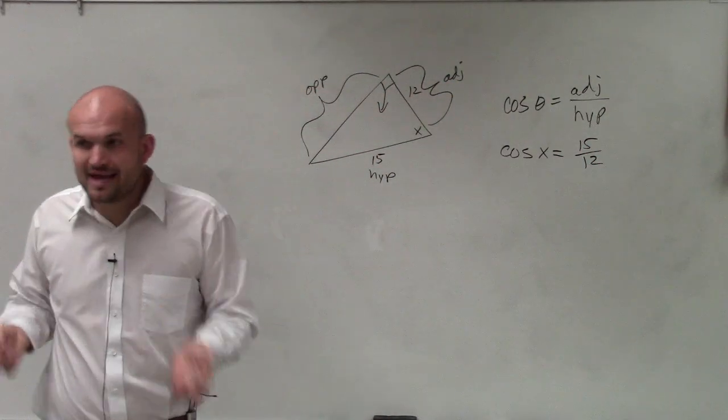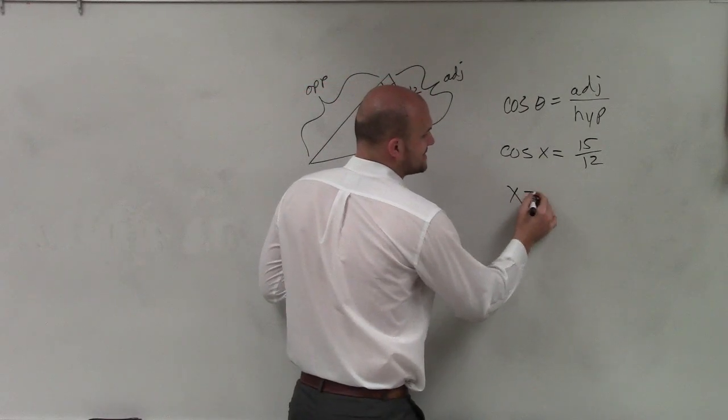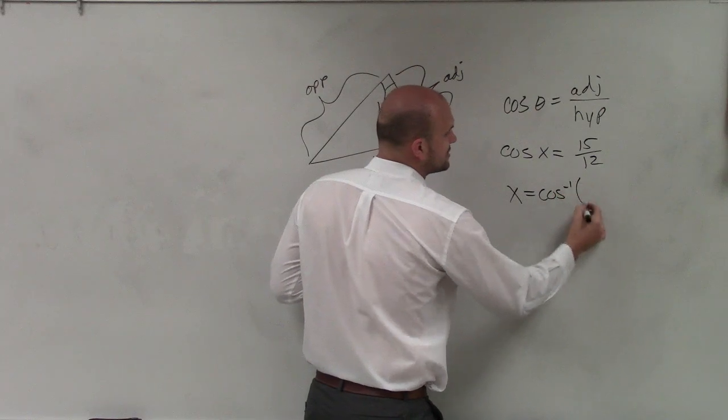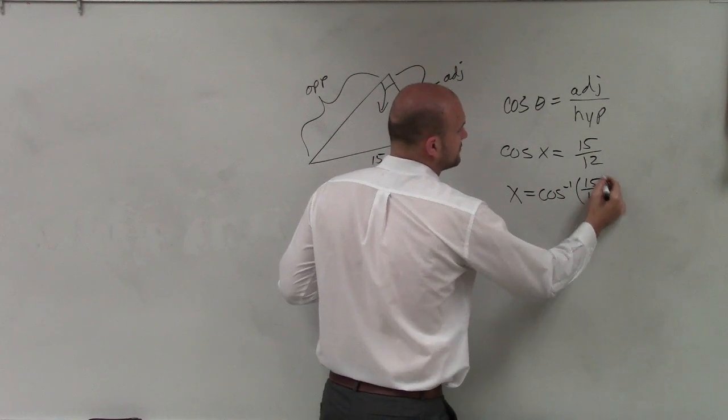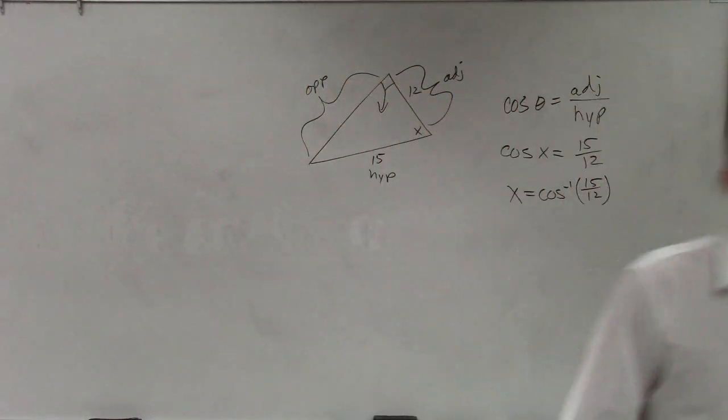Now, again, when we don't have the angle to undo the cosine, I need to say x equals cosine inverse of 15 over 12. Yes, you can reduce it if you'd like to, but it's not necessary when you plug it into your calculator.